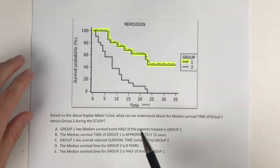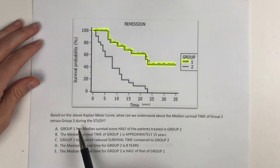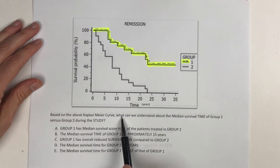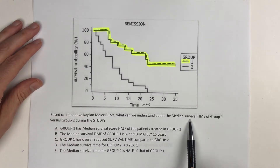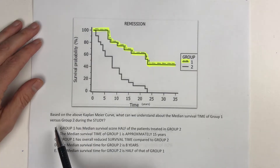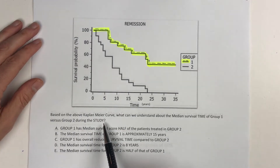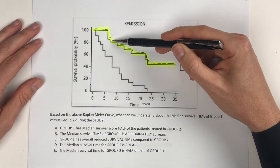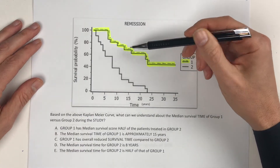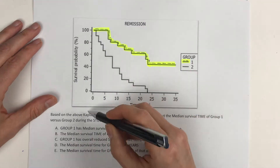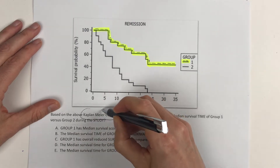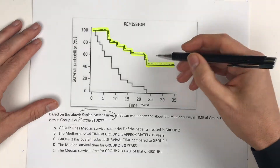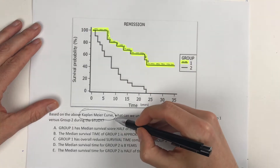Question number one says: based on the above Kaplan-Meier curve, what can we understand about the median survival time of group one versus group two during the study? Any time you see a stair-stepping graph, think Kaplan-Meier curve. There are a couple of principal takeaways from this — any time you see this, you've got to think Kaplan-Meier curve.